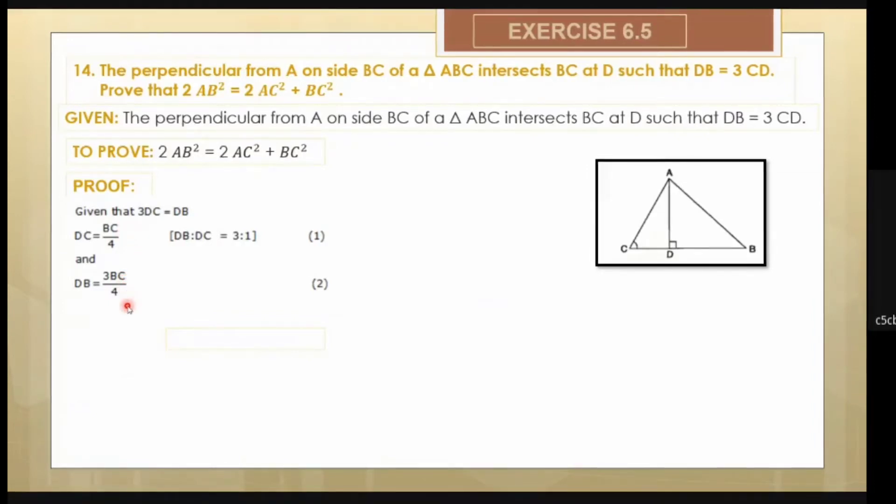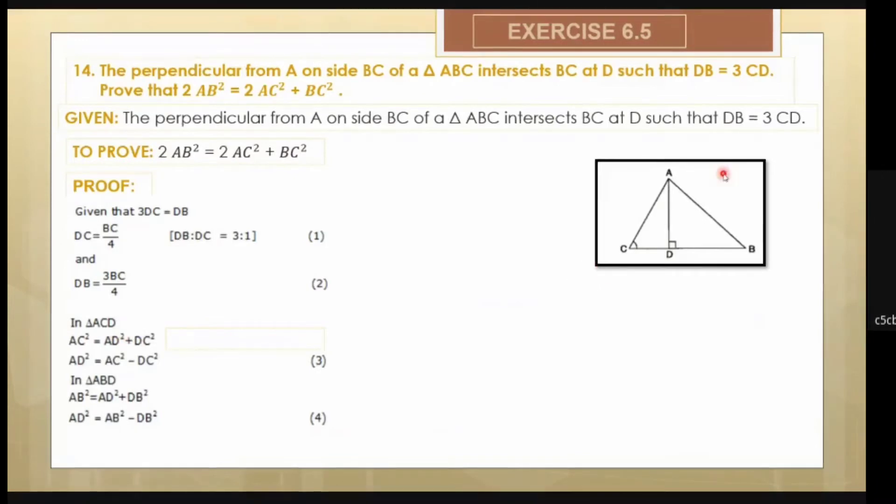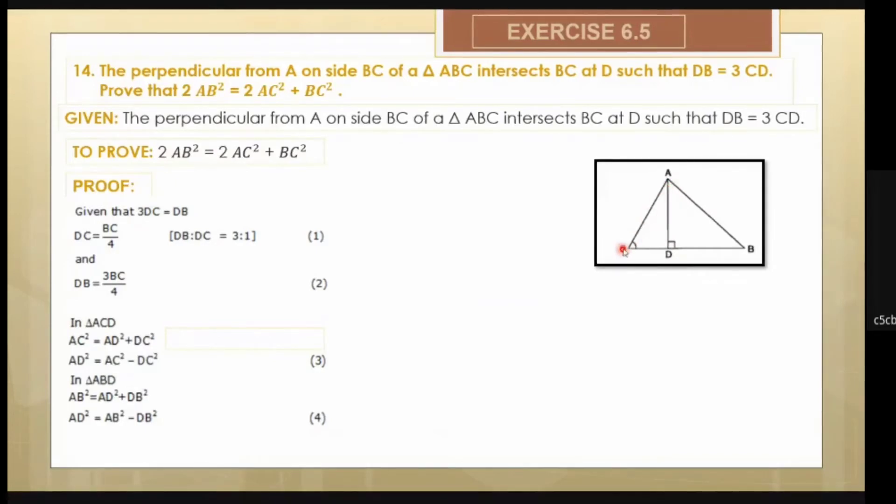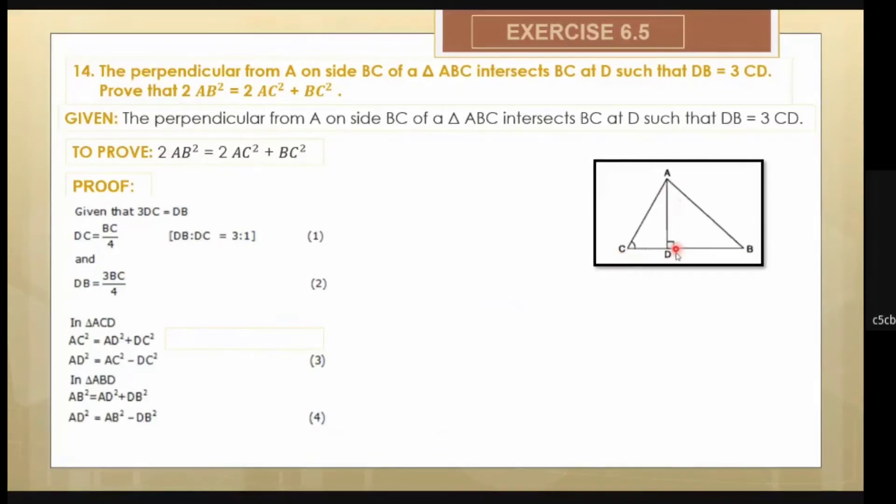I start using the Pythagoras theorem. I take first of all triangle ACD, and in triangle ACD I get AC² = AD² + DC². That means AD² comes out to be AC² - CD².